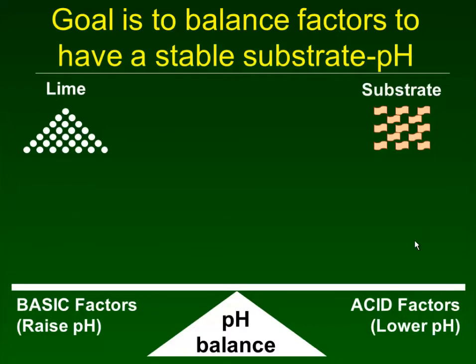The goal in terms of an overall nutrition program is to balance different factors that are basic — pushing pH up — and those that are acidic — pulling pH down. So before planting we typically add limestone to the growing media components to balance out the base from the lime and the acidity of, for example, peat or bark.